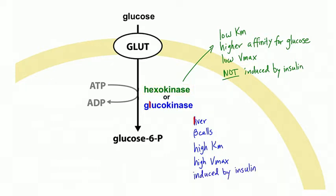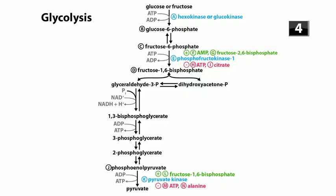The first step of glycolysis is to phosphorylate glucose to G6P. In the glycolytic pathway, step A is either hexokinase or glucokinase, which makes step B, glucose-6-phosphate. Then glucose-6-phosphate goes to step C, fructose-6-phosphate, which is converted to step D, fructose-1,6-bisphosphate. The enzyme that does that is phosphofructokinase-1, or PFK1 - step E. PFK1 is important because it's the rate-limiting enzyme of glycolysis.